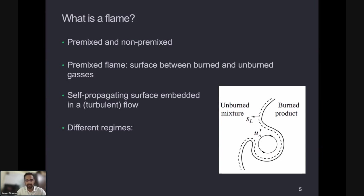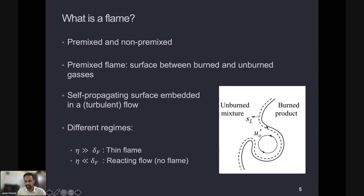The flame can get distorted by the flow, but it also has its own self-propagation because of the active burning of the unburned material. It propagates from the burned towards the unburned material, perpendicular to its surface. One can essentially think of a flame as a self-propagating surface embedded in the flow — a canonical example of self-propagating systems. There are different regimes. If you think of the Kolmogorov length scale of the turbulent flow compared to the thickness of the flame: if the Kolmogorov length is much larger than the flame thickness, the flame really is an infinitesimally thin surface. This is what we would call a thin flame, the regime most amenable to mathematical description.